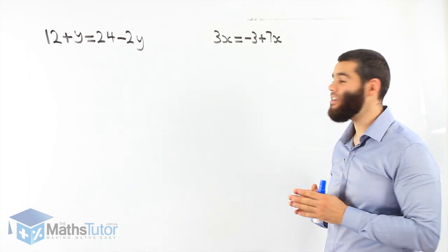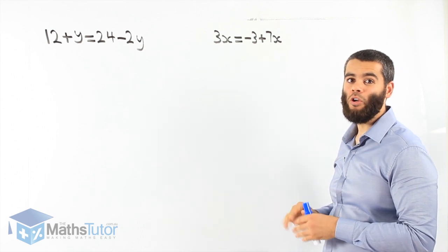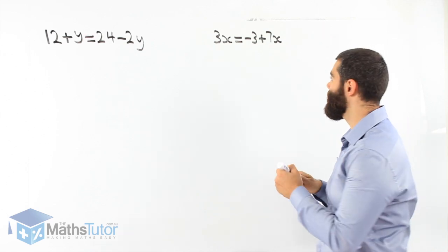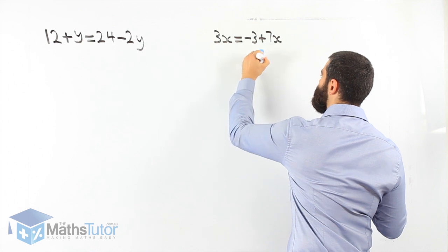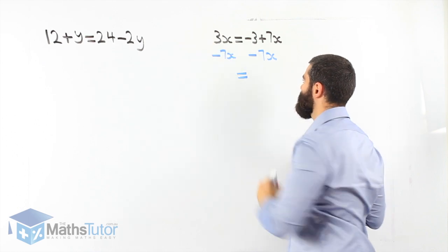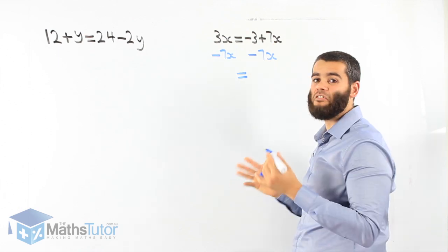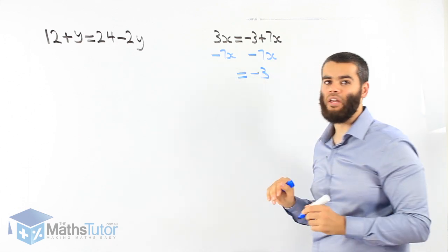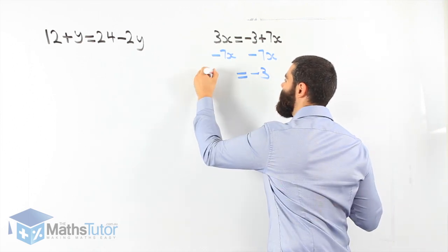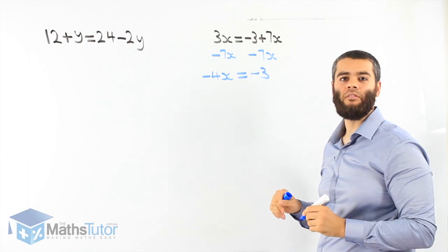Once again, we can straight away identify pronumerals on both sides. We want to get rid of the pronumerals on the right and keep them on the left. So we do minus 7x — what we do to one side, we do to the other. So we have negative 3 plus 7x, minus 7x. 7x take away 7x is gone, we're left with minus 3. And 3x take away 7x: 3 take away 7 is negative 4x. So negative 4x equals negative 3.